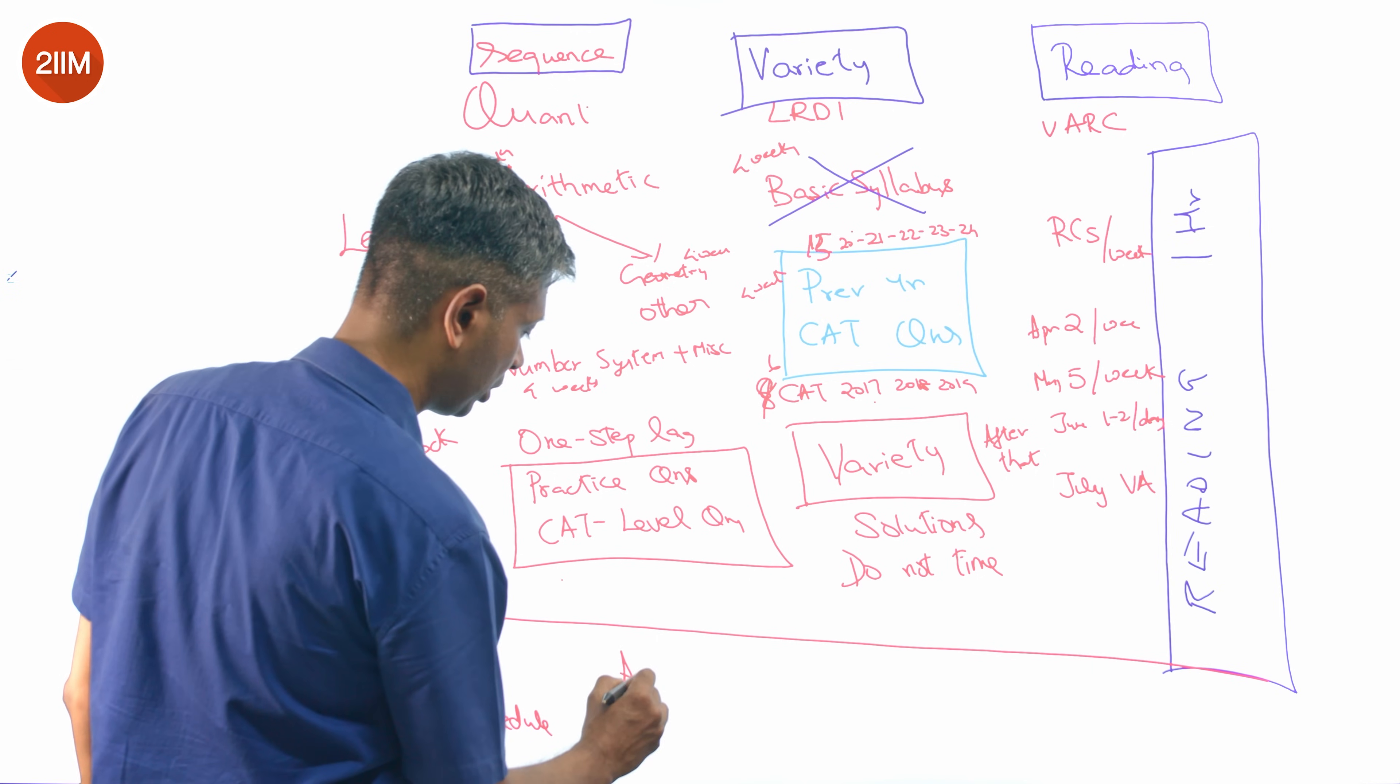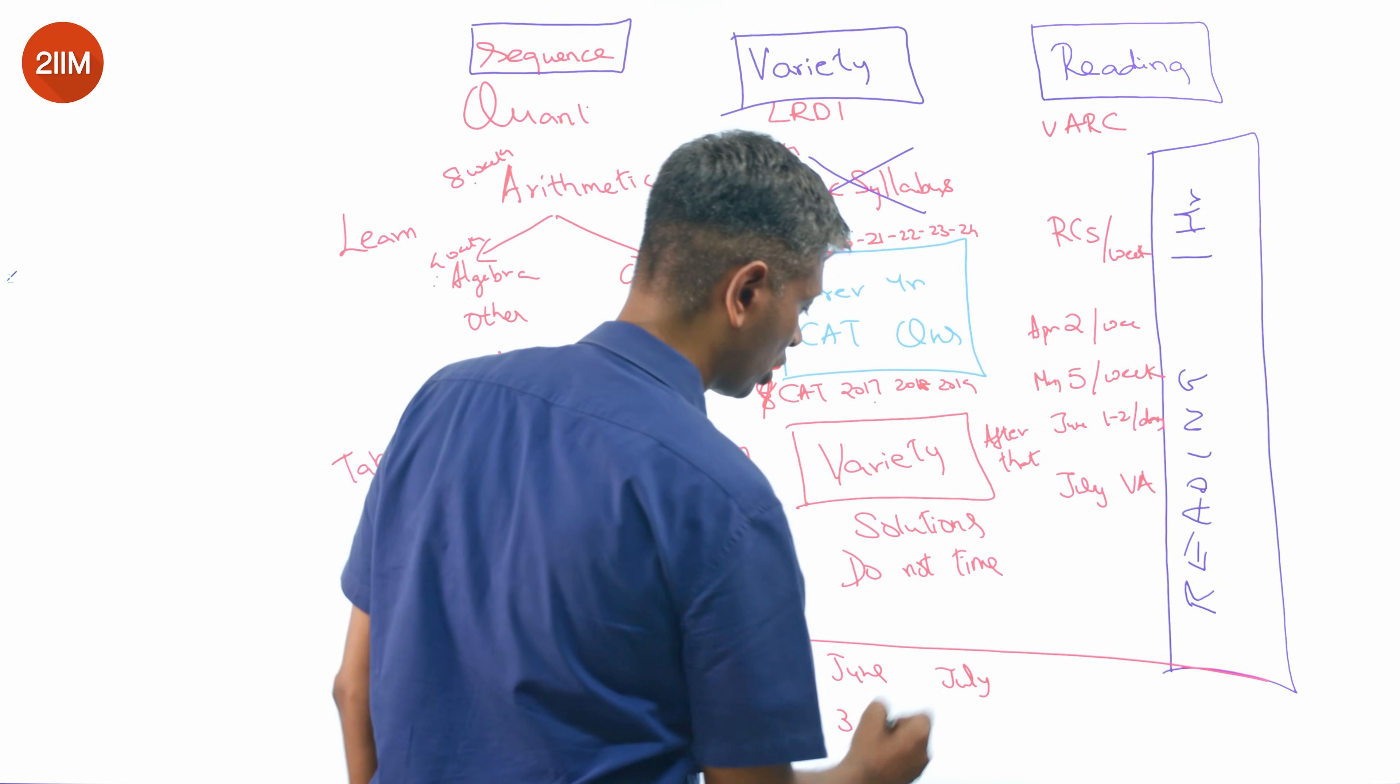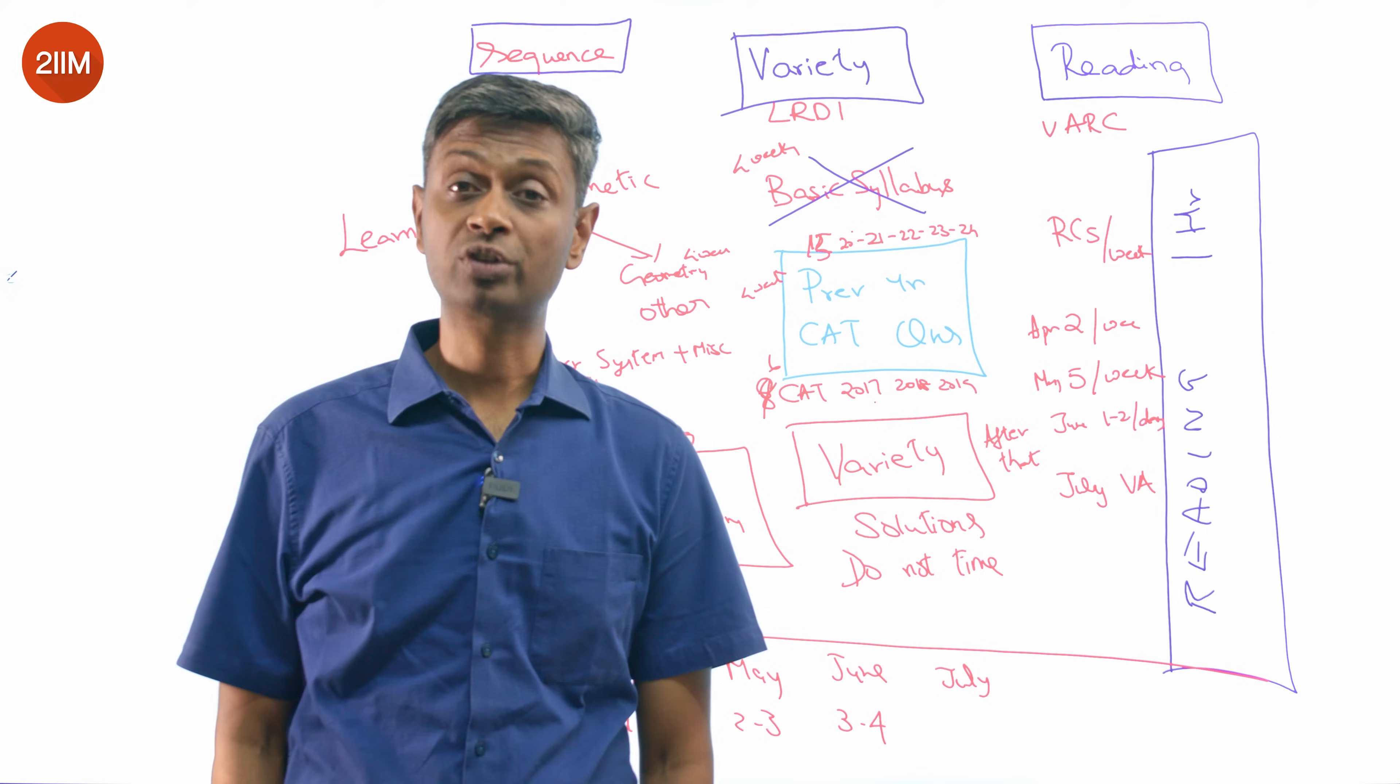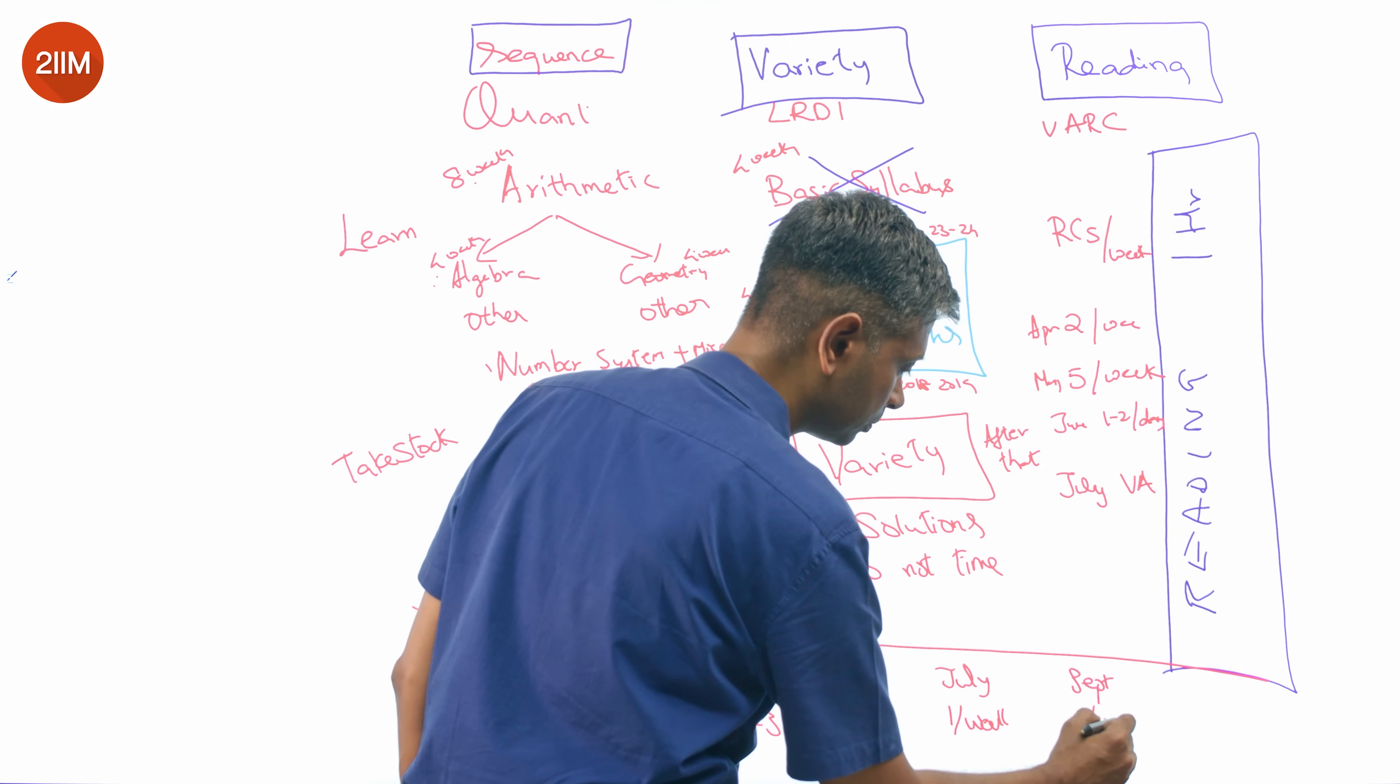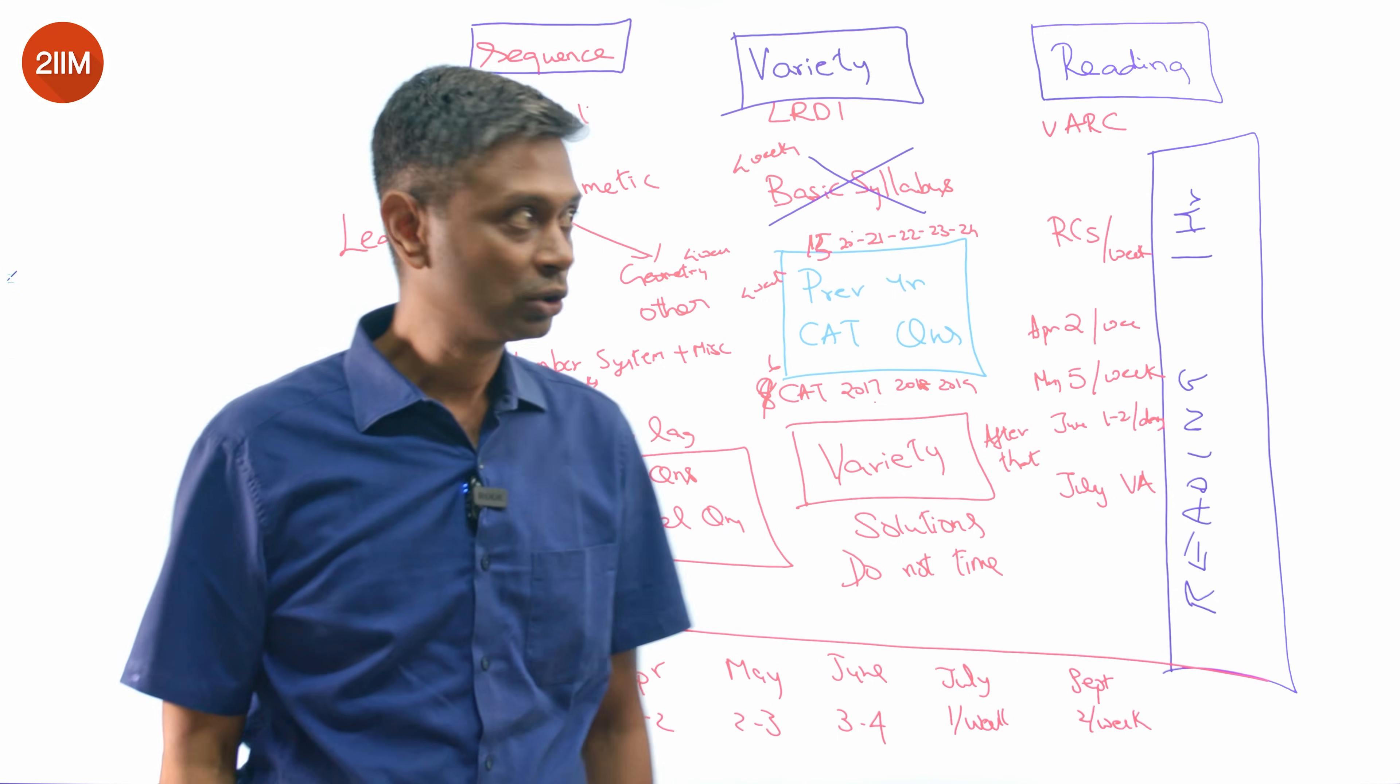You should do April, one or two mocks. May, two to three mocks. By the time you're in June, you should be looking to do one mock per week, give or take. By the time you're in July, it should be one mock per week, ramped up to two per week by the time you hit end of September. By July you're taking one per week. By September it goes up to two per week. That's your mock schedule which is overlaid on this. This gives you a sense of what is it that you are preparing for.